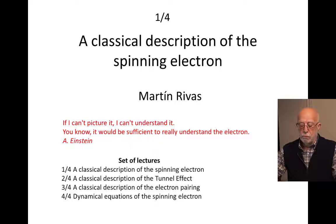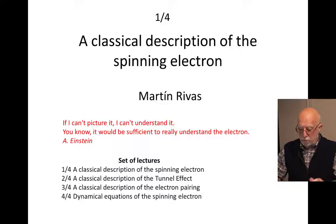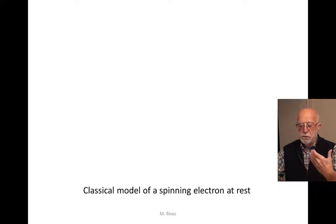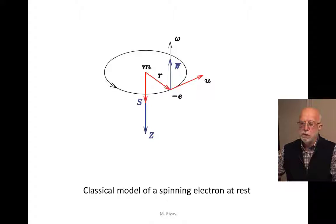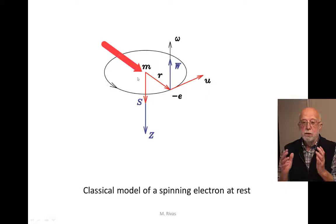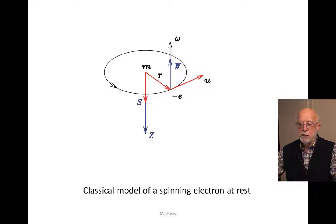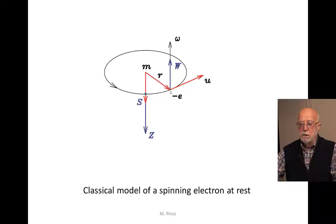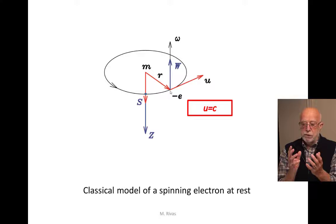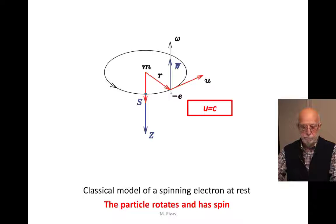The last and fourth lecture of this set will be devoted to the introduction of the dynamical equations of spin and electrons — differential equations for the model we are going to introduce in a few moments. The formalism we have developed gives this classical model of the spinning electron at rest. Electron at rest means that the center of mass of the electron is at rest. We don't know the shape or the size of the electron, but the key feature is that it has a center of mass M and a center of charge E, and the center of charge is moving around the center of mass at the speed C.